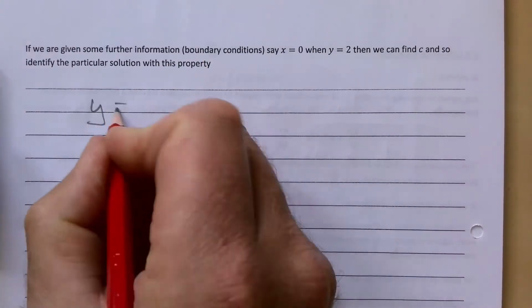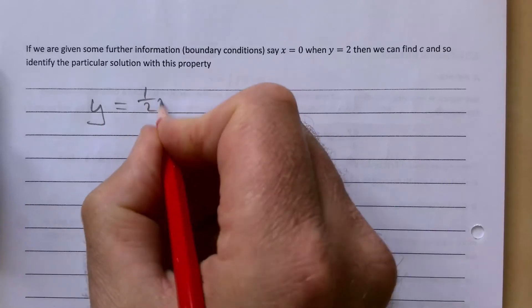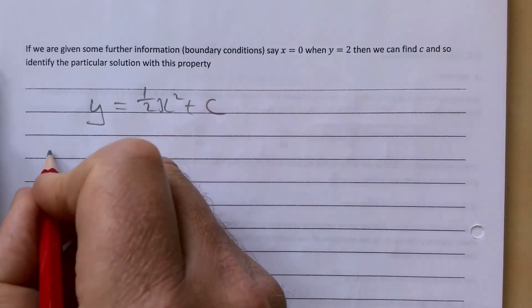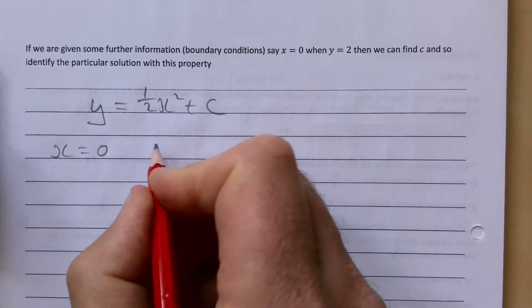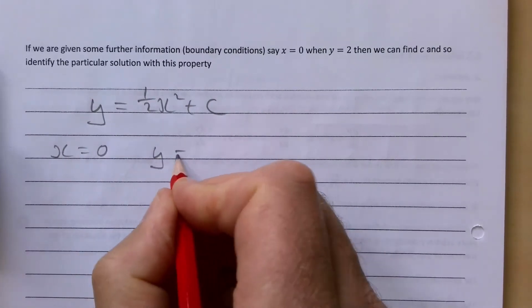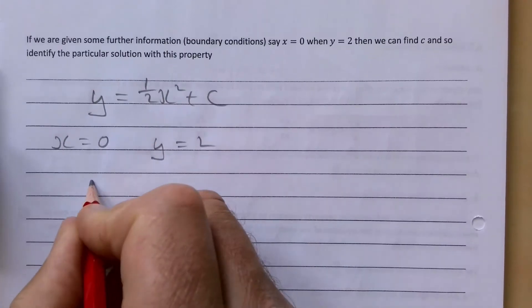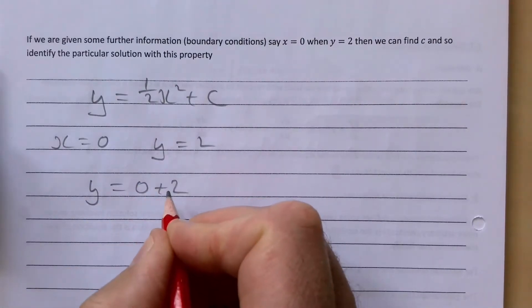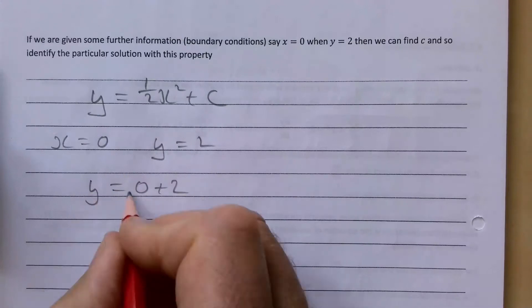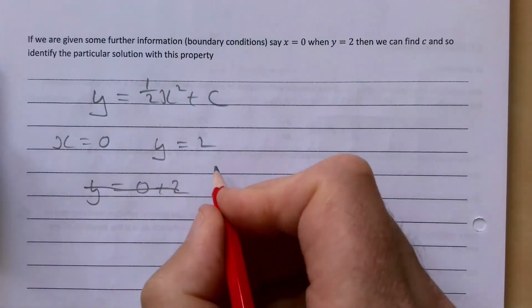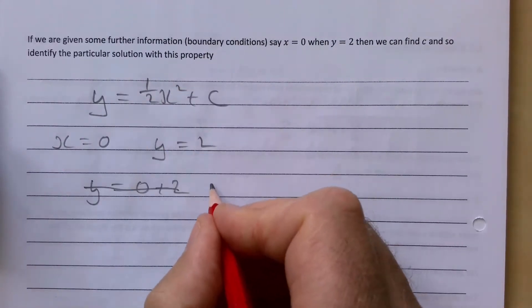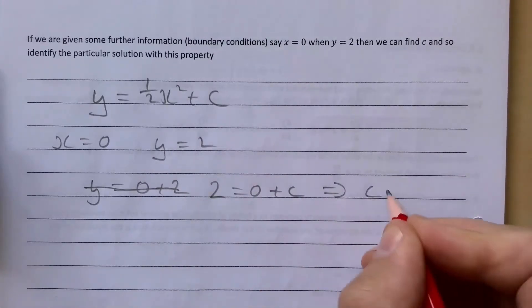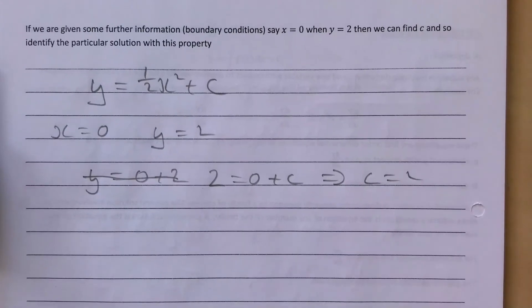We know y = ½x² + c from the previous one. We're going to substitute in x = 0 when y = 2. Subbing these in, we get 2 = 0 + c, and that gives us a value of c = 2.